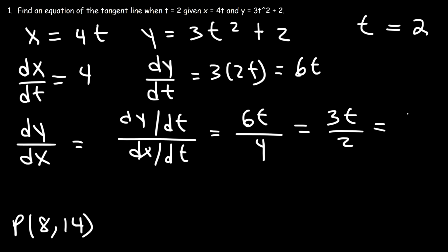To find the slope, we need to replace t with 2. So dy/dx is equal to 3 times 2 over 2, which equals 3 when t is 2. So the slope is 3.